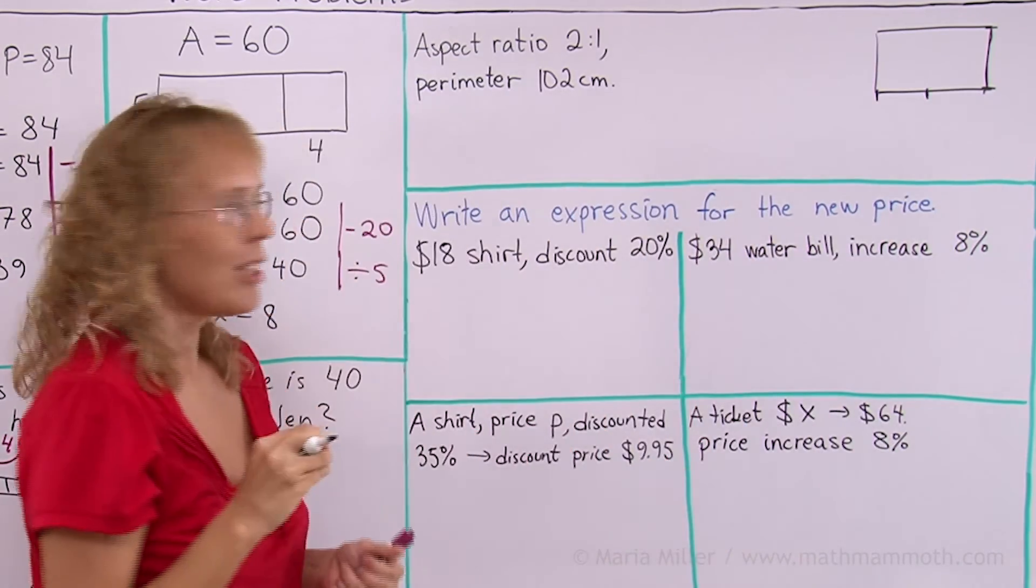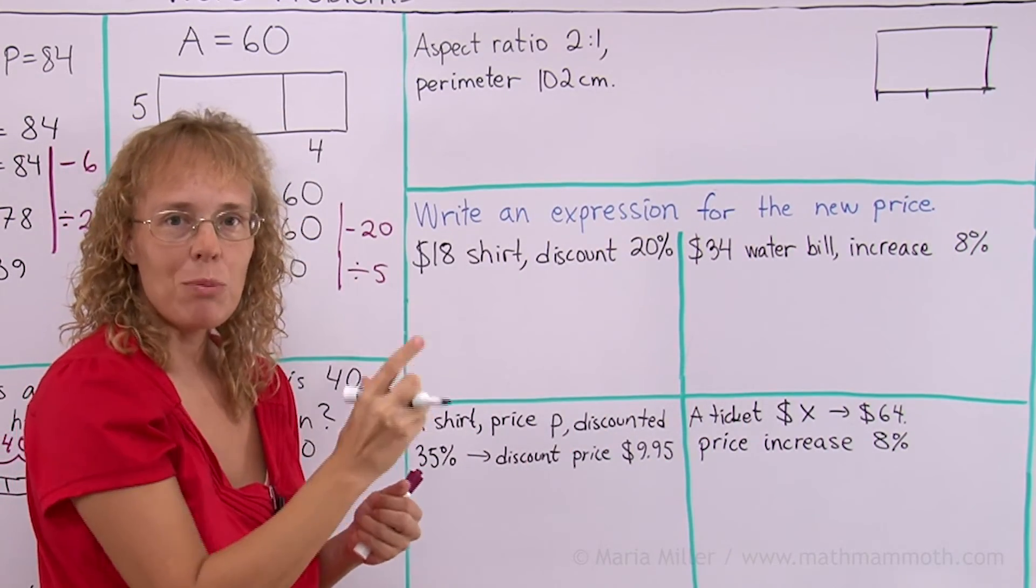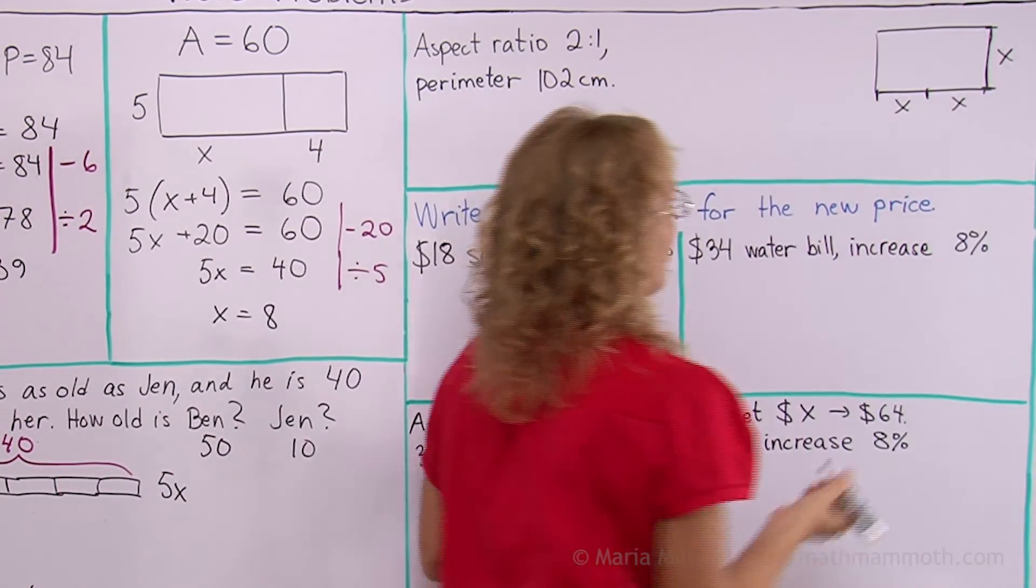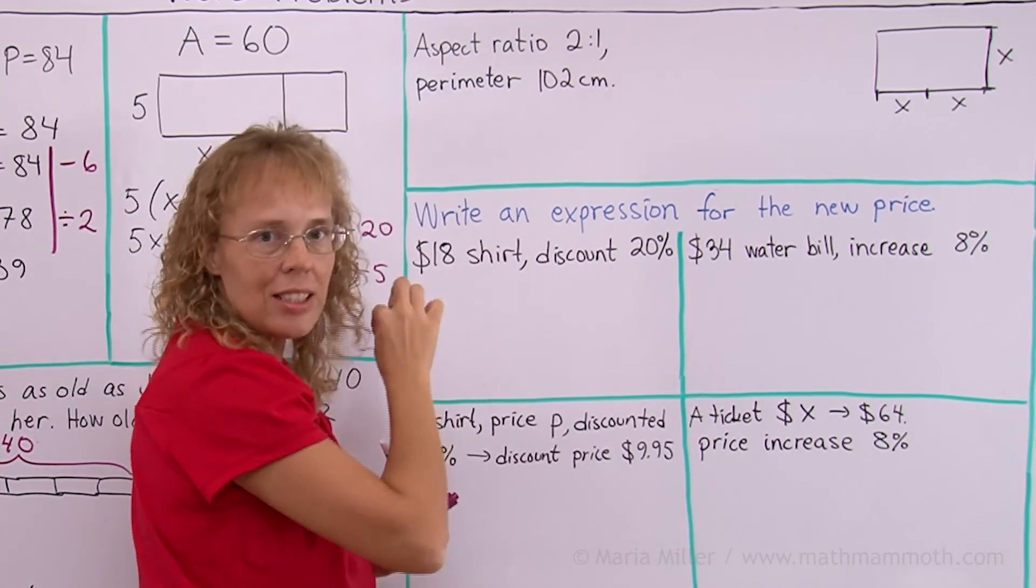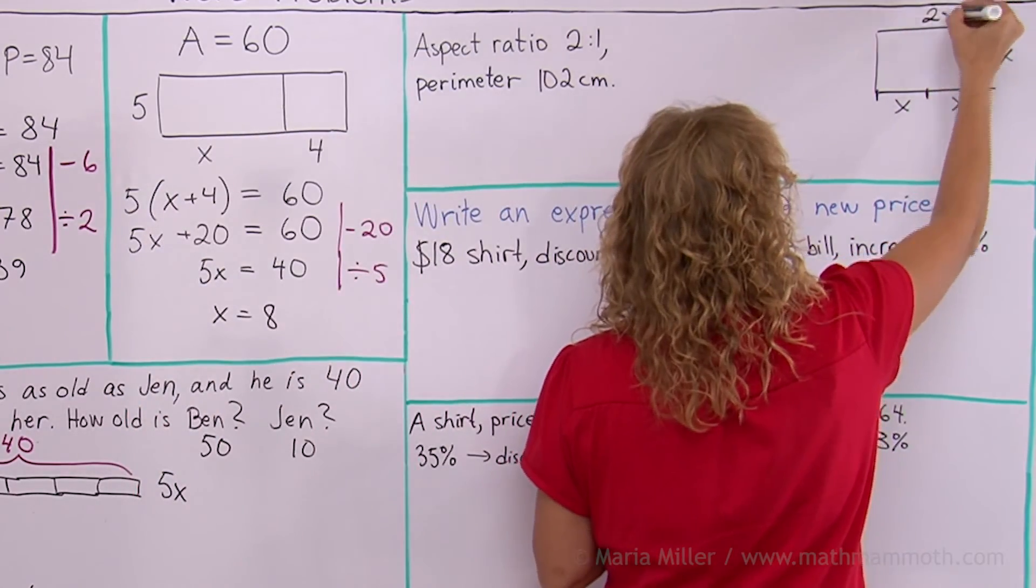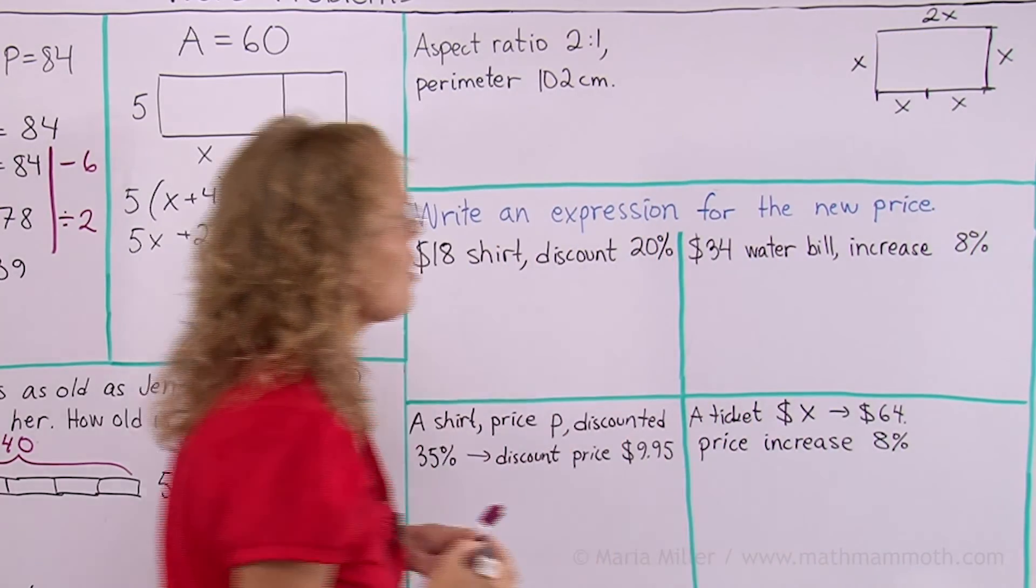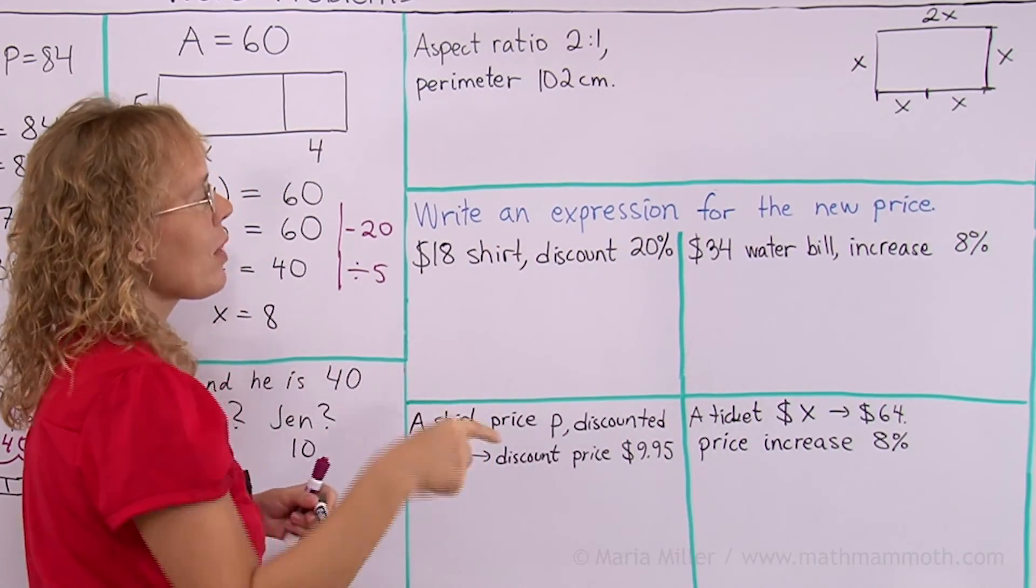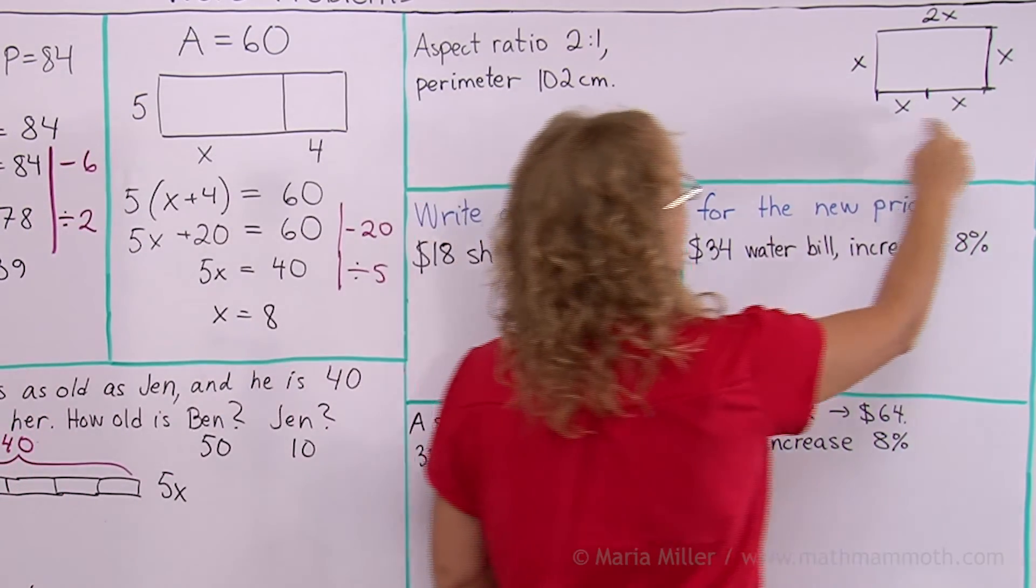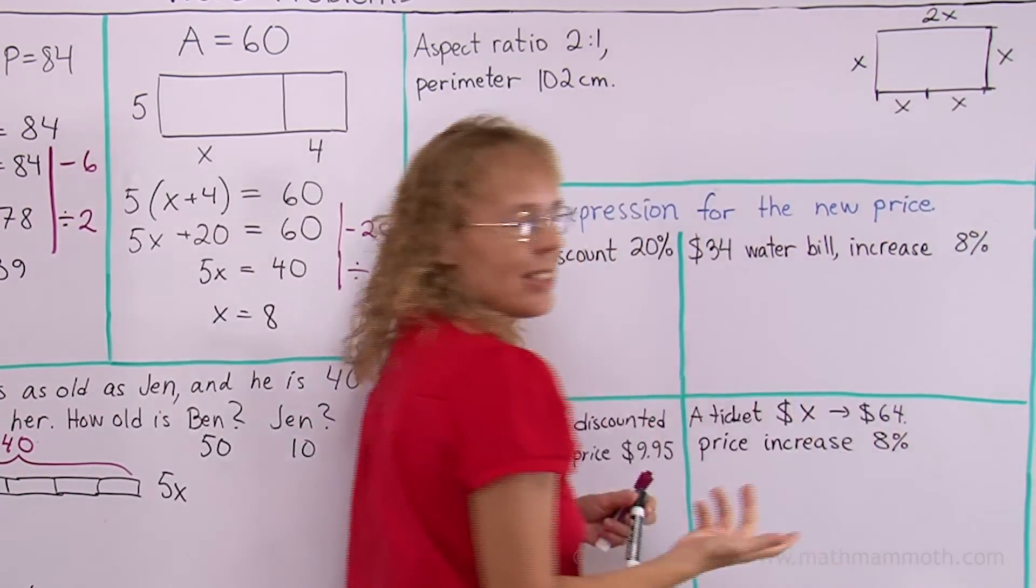And now, if I want to write an equation, of course, my unit here would be my x. That's handy to use. This is basically x here, x here and x here. So the one side is 2x and the other side is x. This side is 2x and this side is x. And so from there, I get my equation. All the way around is 102 cm, but all the way around is also 1, 2, 3, 4, 5, 6 x's.